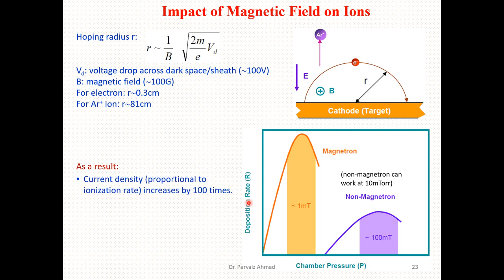you can see that we have increased deposition rates in magnetron sputtering at a vacuum of almost 1 millitorr. For non-magnetron sputtering, it works at around 10 millitorr, and the deposition rate is much slower with chamber pressure.